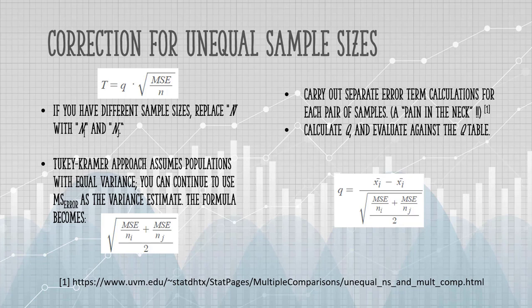The easier of the two approaches is probably the Tukey-Kramer approach. It assumes the populations have equal variances. You can continue to use mean squared error as the variance estimate. And the formula looks a little different. You'll want to carry out separate error term calculations for each pair of samples.